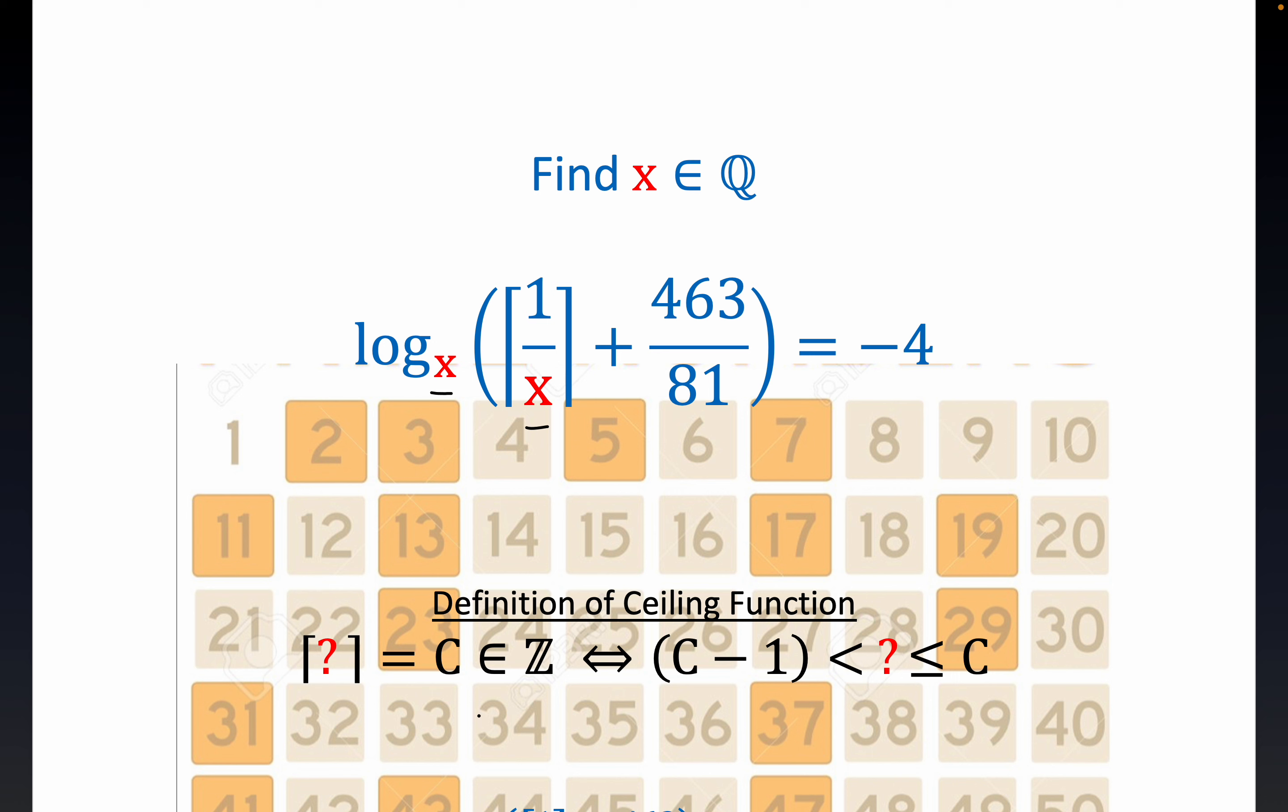So for example, if you wanted to do the ceiling of 31 over 6, well 30 divided by 6 is 5. So the ceiling of this is going to be equal to 6.